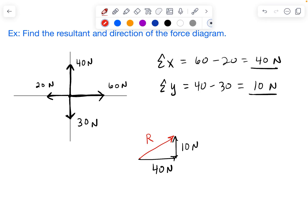And this makes it kind of simple because we can just implement Pythagorean theorem here. So 40 squared plus 10 squared is going to equal R squared.